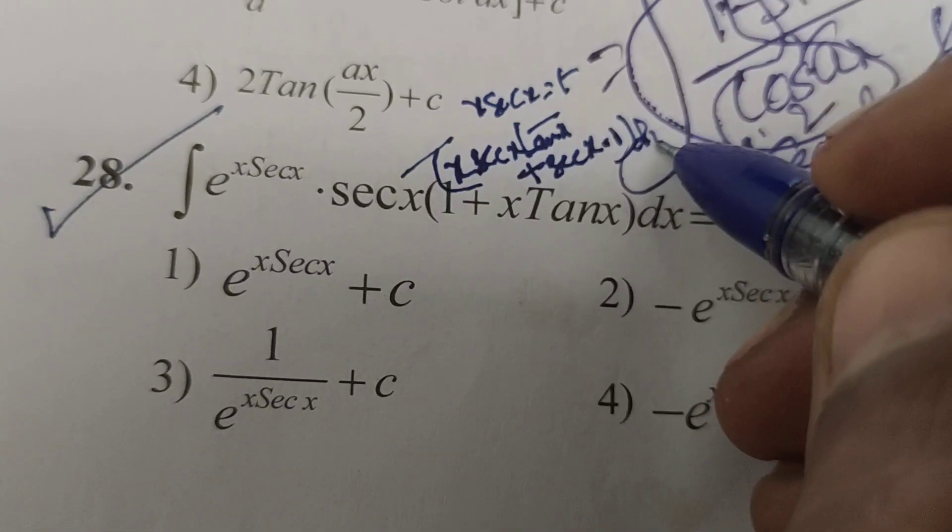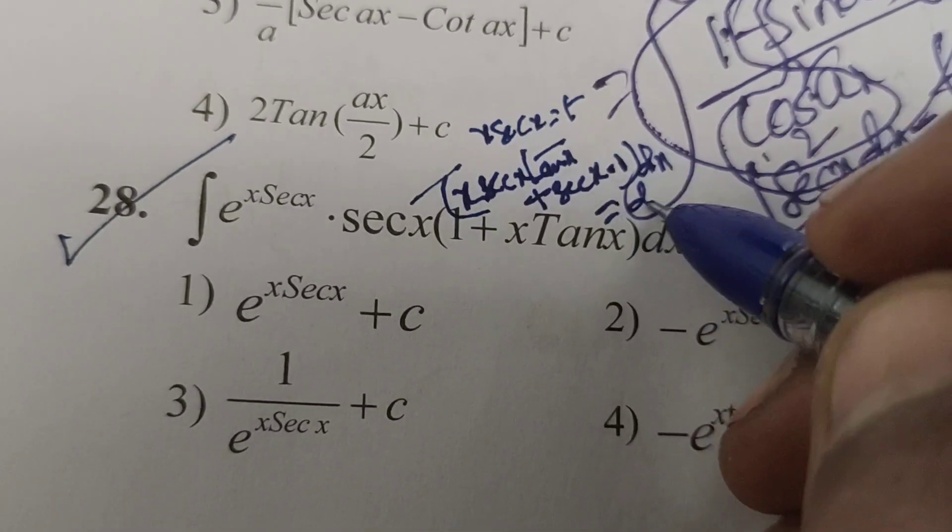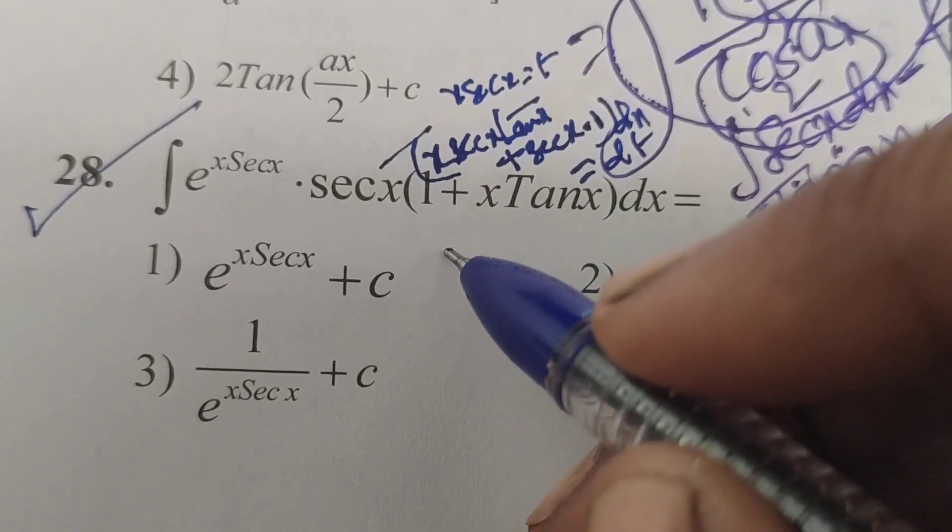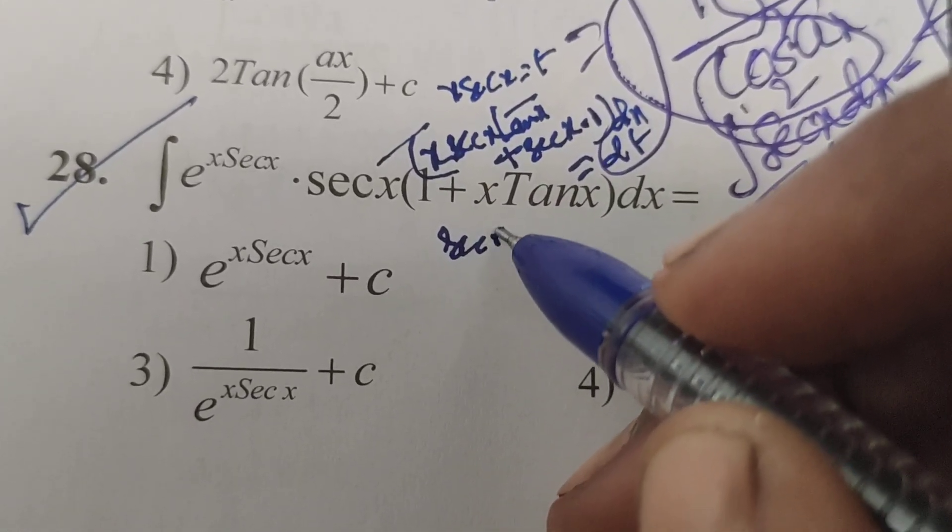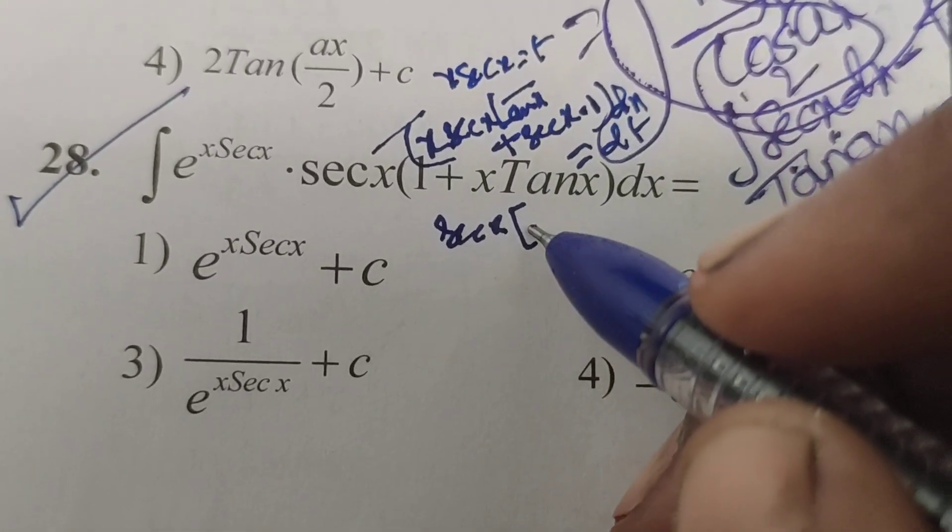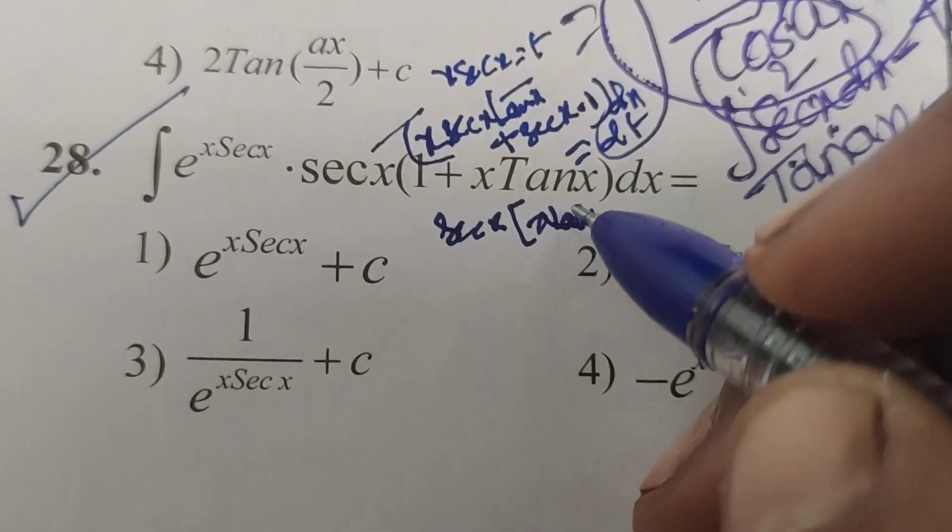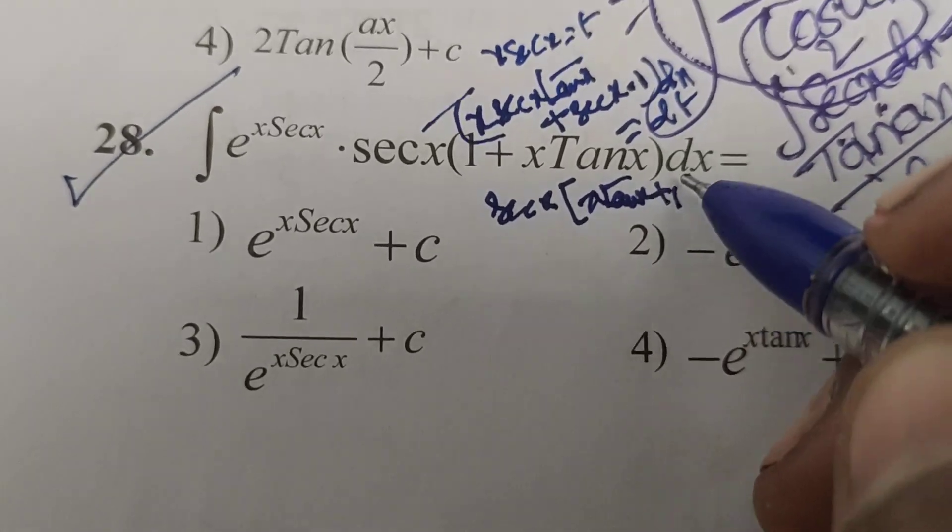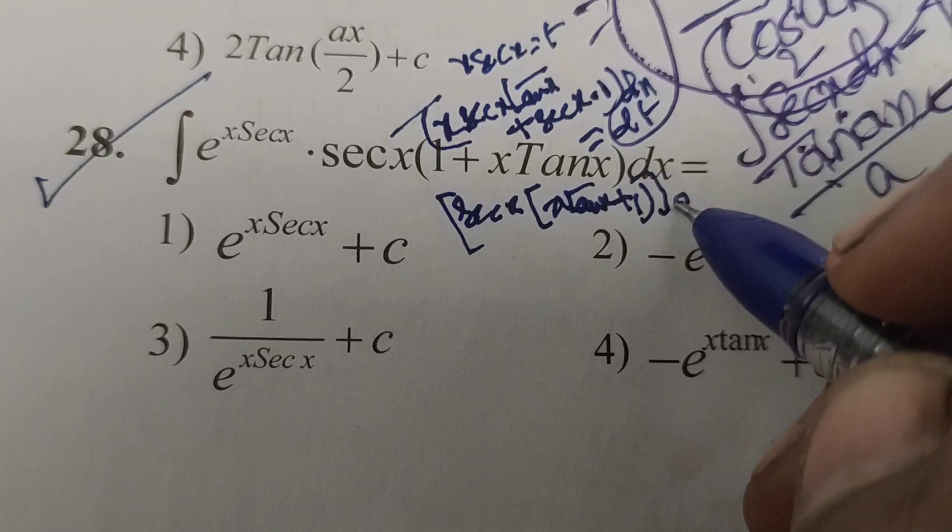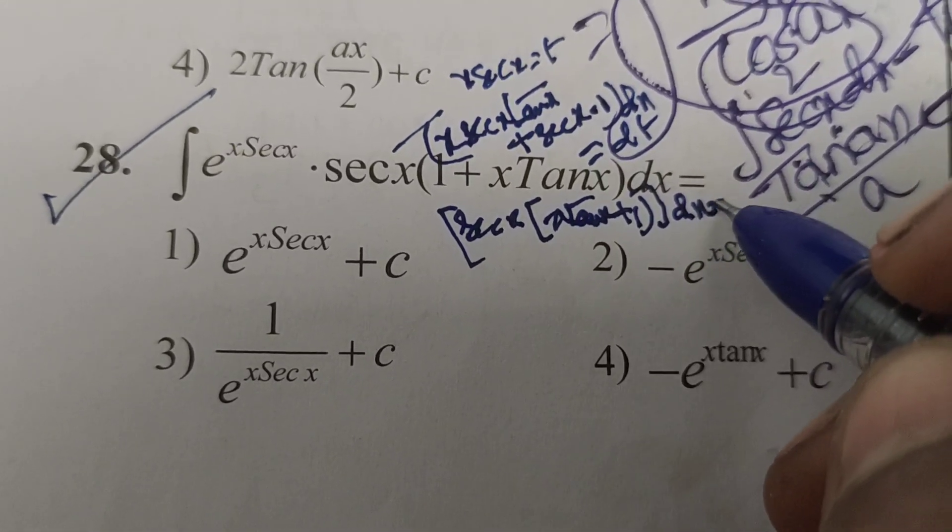Into dx equals to dt. Now here sec x means common factor. Here for sec x into x tan x plus 1, x tan x plus 1 into dx equals to dt.